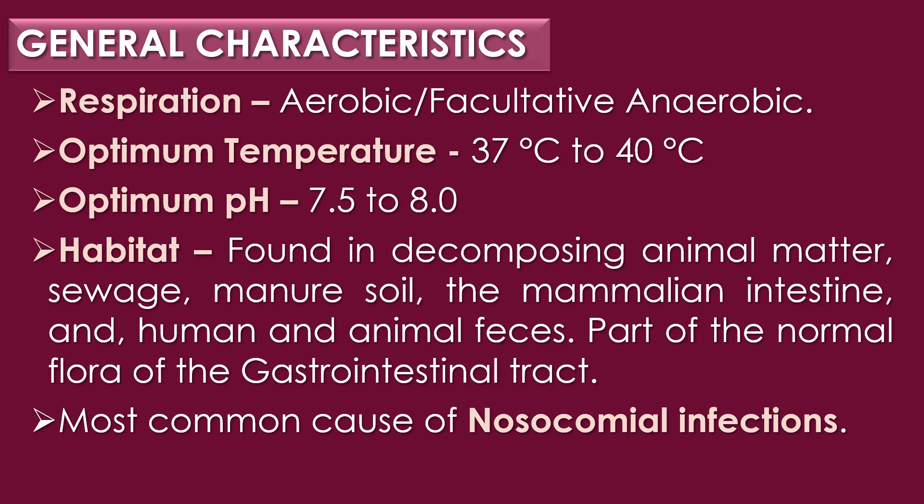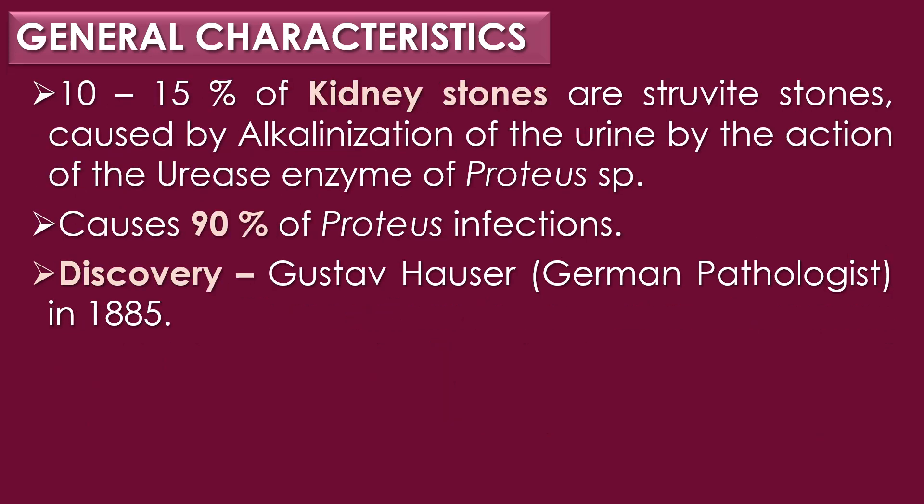Regarding the habitat, Proteus mirabilis is widely distributed in nature as a saprophyte, being found in decomposing animal matter, sewage, manure, soil, the mammalian intestine, and human and animal faeces. It is part of the normal flora of the gastrointestinal tract and is widely recorded as the most common cause of nosocomial infection. About 10 to 15 percent of kidney stones, or struvite stones, are caused by the alkalinization of urine by the action of the urease enzyme of Proteus mirabilis. Urease enzymes are enzymes that split urea into ammonia and carbon dioxide.